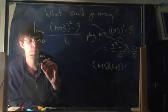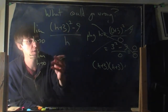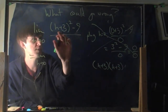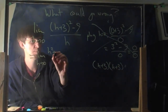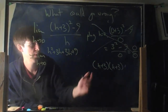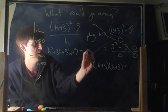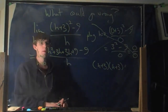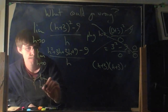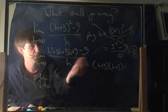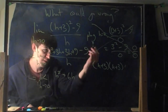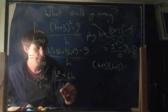So the whole limit becomes: I'm going to replace (h+3)² with the FOIL result: h squared plus 3h plus 3h plus 9, minus 9, all divided by h. The 3h and 3h combine to give 6h. The h squared stays. The 9 and 9 cancel. So I have (h squared plus 6h) divided by h.